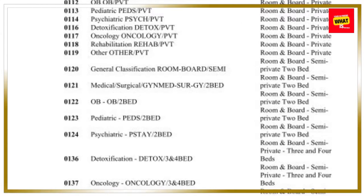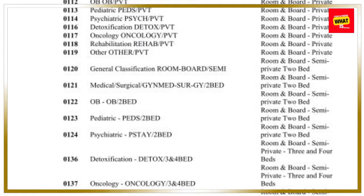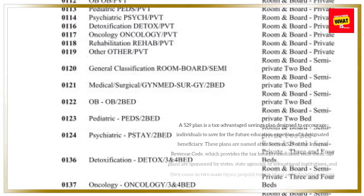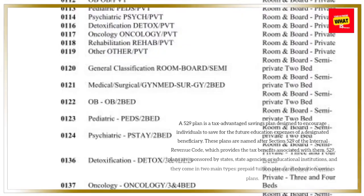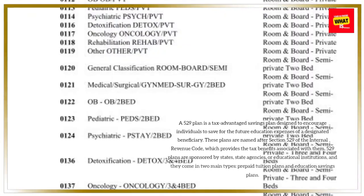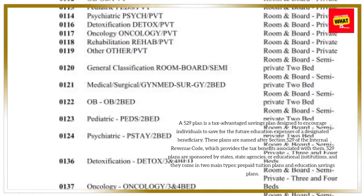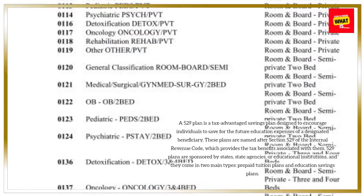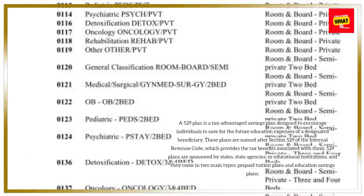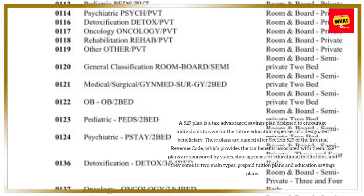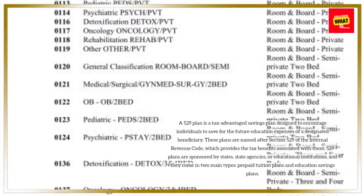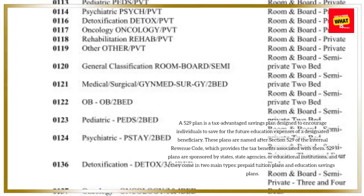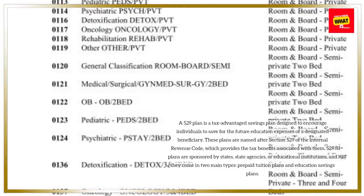A 529 plan is a tax-advantaged savings plan designed to encourage individuals to save for the future education expenses of a designated beneficiary. These plans are named after Section 529 of the Internal Revenue Code, which provides the tax benefits associated with them.